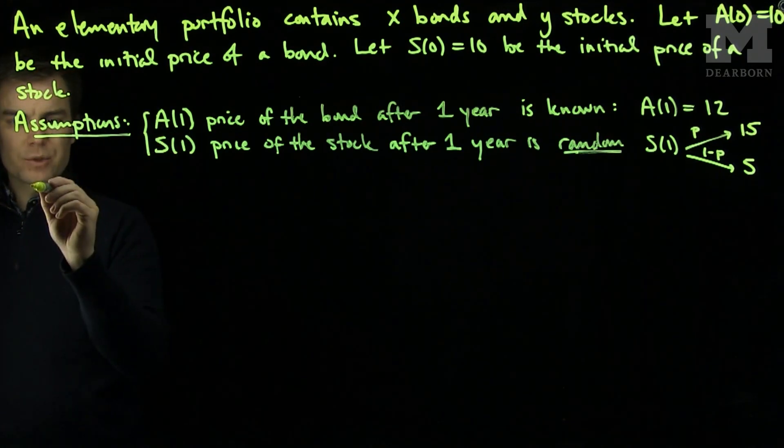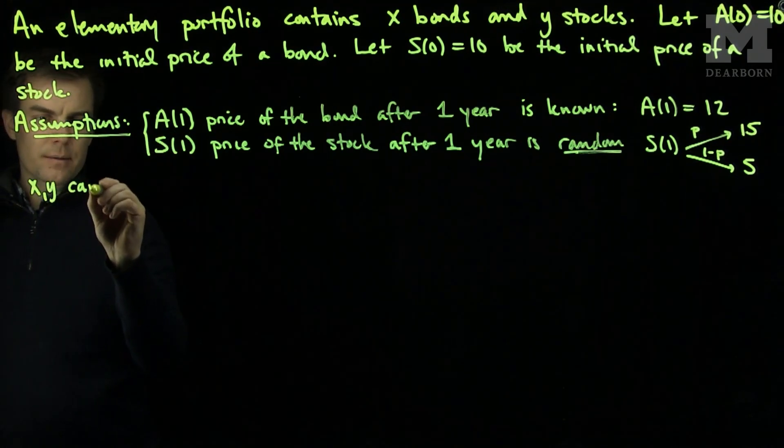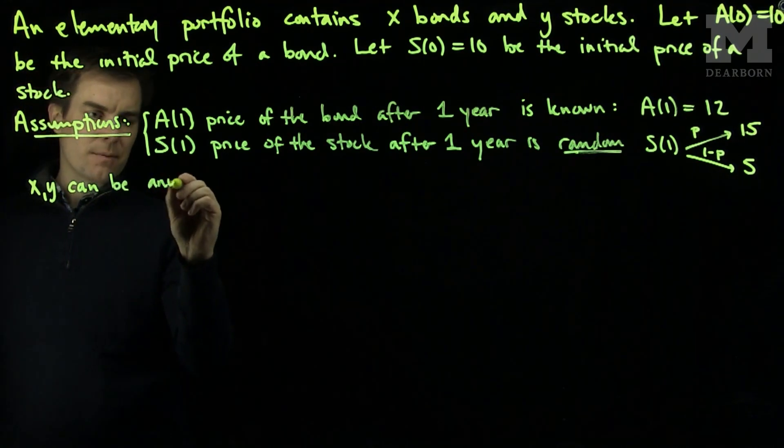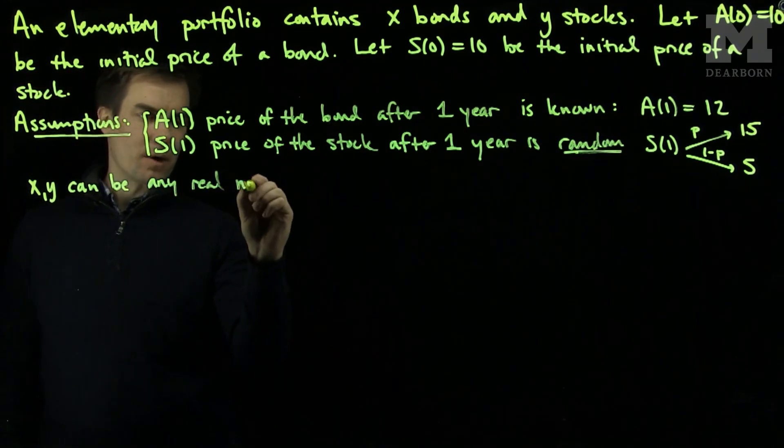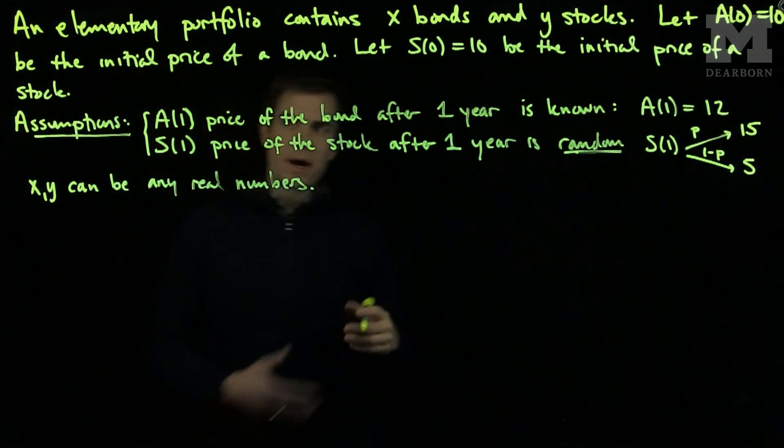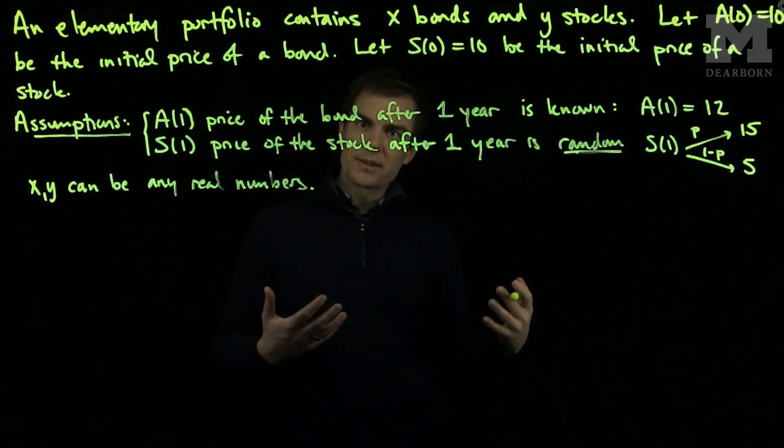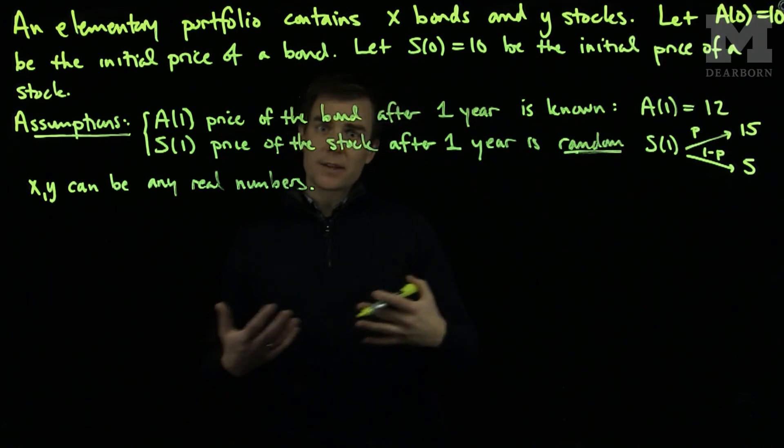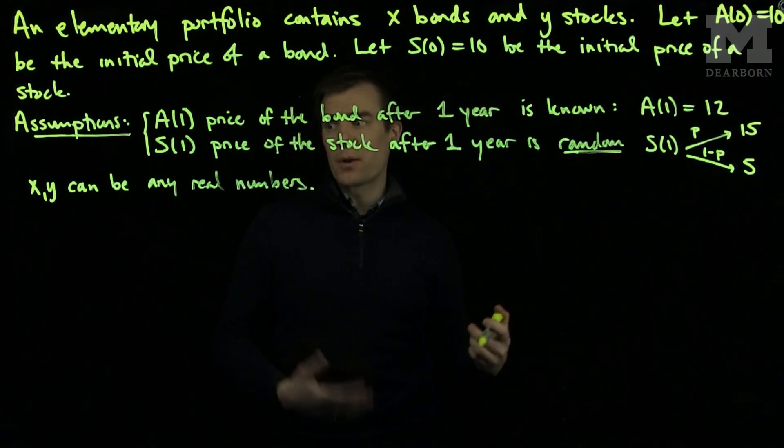Our second assumption is that X and Y can be any real number. Meaning that I can buy or sell as many stocks or fractions of stocks as I like, and the same thing with bonds.